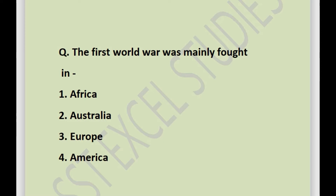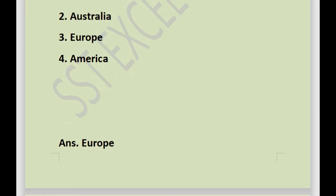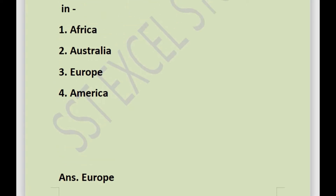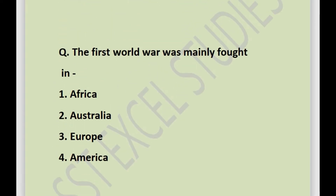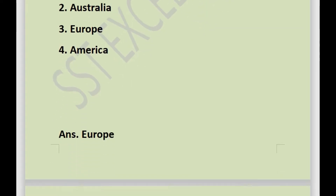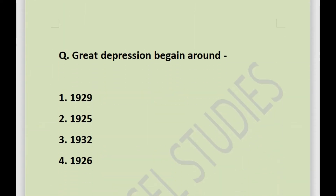Our first question is: the First World War was mainly fought in — options are Africa, Australia, Europe, or America. The answer is Europe. The First World War was fought between the countries of the continent Europe.